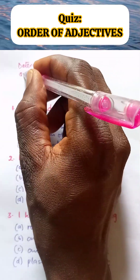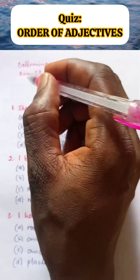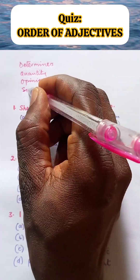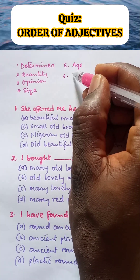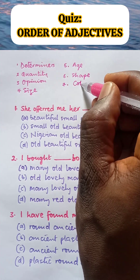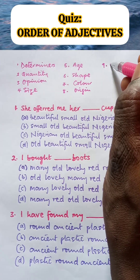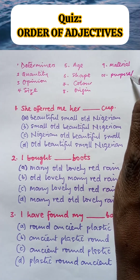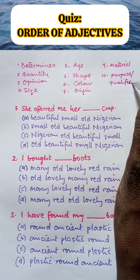We have: 1. Determiners, 2. Quantity, 3. Opinion, 4. Size, 5. Age, 6. Shape, 7. Color, 8. Origin, 9. Material, 10. Purpose or Qualifier. This is the order to follow.